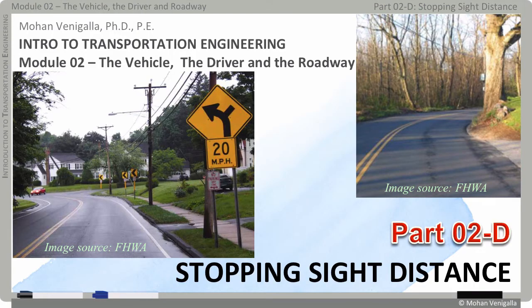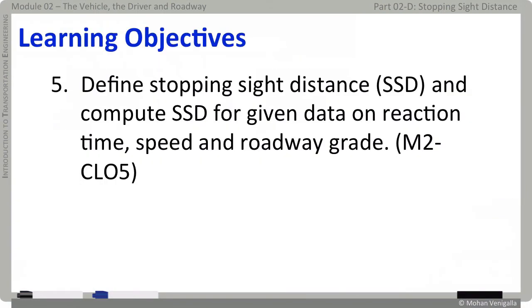This part D of module 2 is going to be all about stopping sight distance. At the end of this part you should be able to define stopping sight distance or SSD for short and compute SSD for given data on reaction time, vehicle speed and roadway grade.